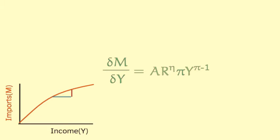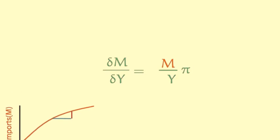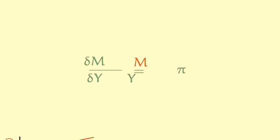Next, we split the domestic income term into domestic income to the power of pi and domestic income to the power of minus 1. Now, from our initial equation, we already know that imports equal a times the real exchange rate to the power of eta times domestic income to the power of pi. So, we can replace that term. Finally, solving for pi gives this result.